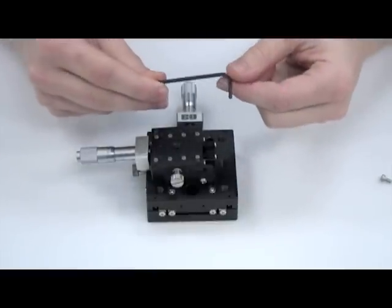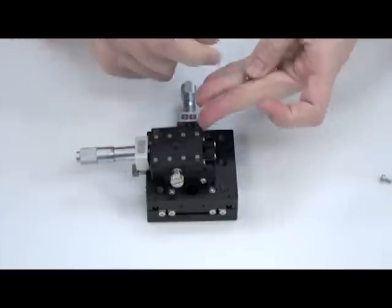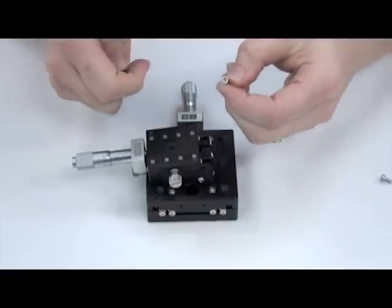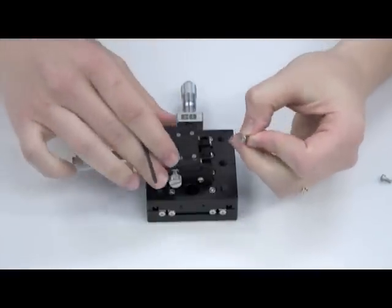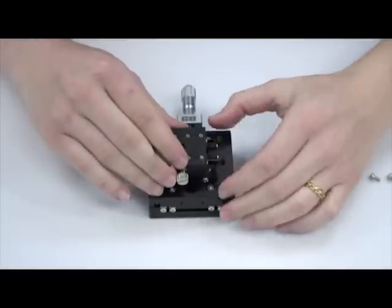Step 3. Now using the 2.5mm metric Allen wrench and the included M3 socket head cap screws, thread this end of the 40mm stage to the top plate.